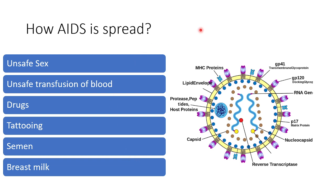Now let us see how AIDS is spread. It is spread through unsafe sex, unprotected sex, and sex with multiple partners. Unsafe transfusion of blood from unknown persons. Drugs — persons who are addicted to drugs may use needles on a rotation basis, so they are more prone to HIV infection.